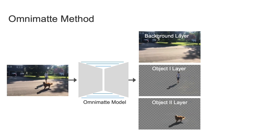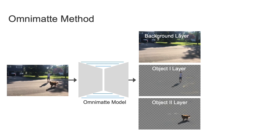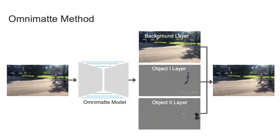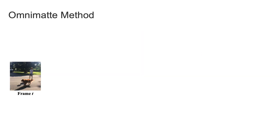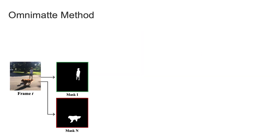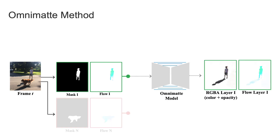Our model is trained per video and sees only the input video without any additional examples, trained in a self-supervised manner by learning to reconstruct the input video without any labels. We're given an input video and object segments. We first precompute the optical flow using RAFT and mask the flow by each object segment. The segments and the flow are input to our model which has a UNET architecture. We predict layers individually in a separate feedforward pass, and our outputs are the RGBA layers in addition to the refined flow for each layer, which we use in a temporal consistency loss term.